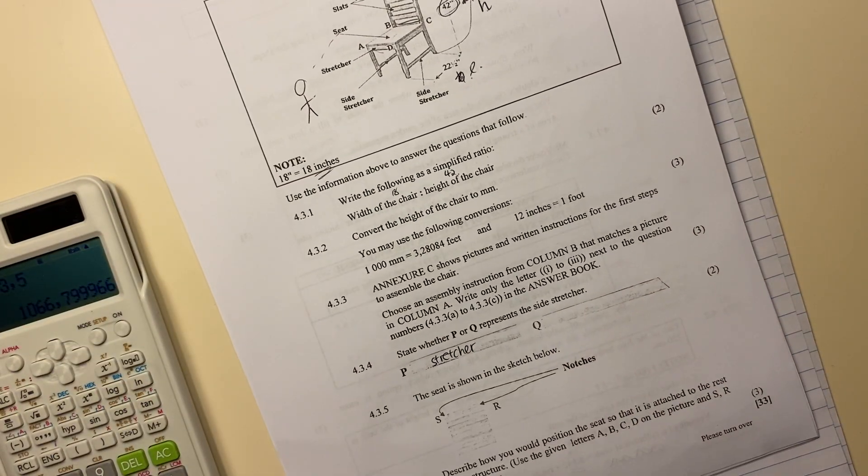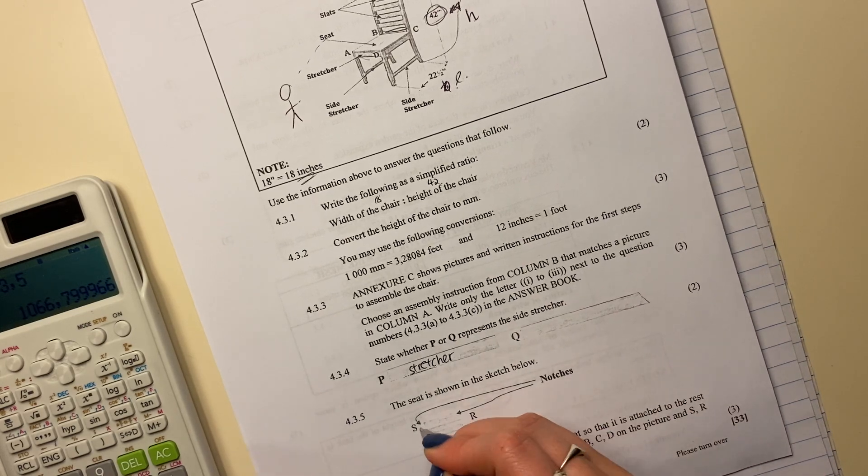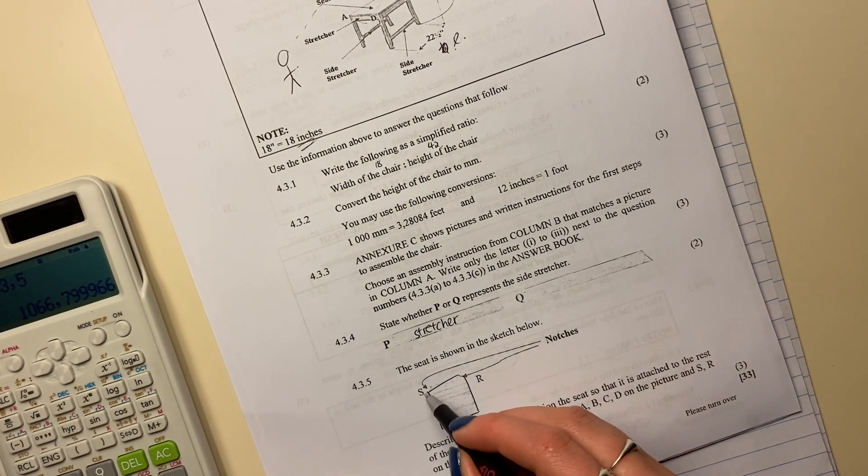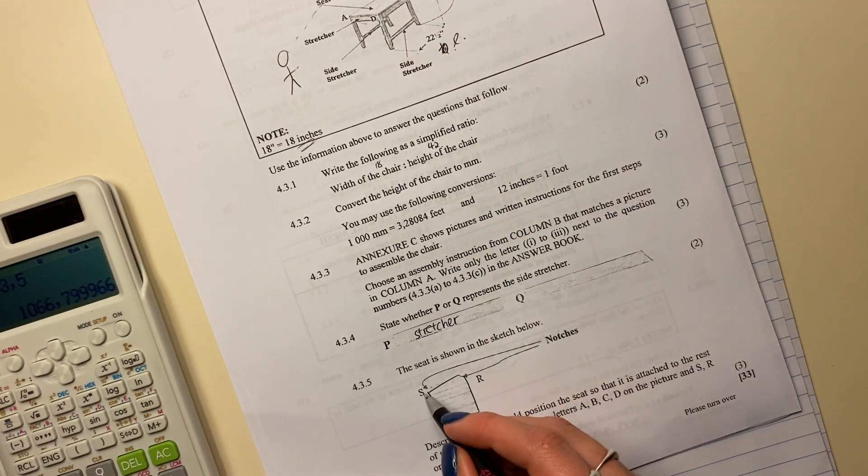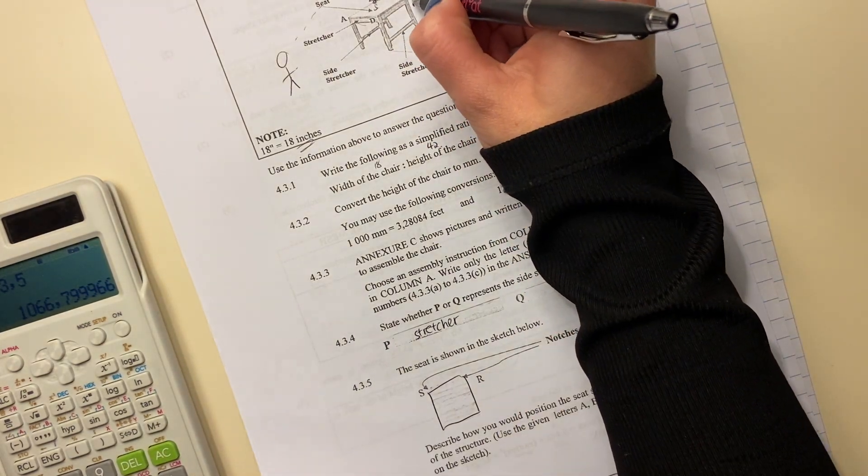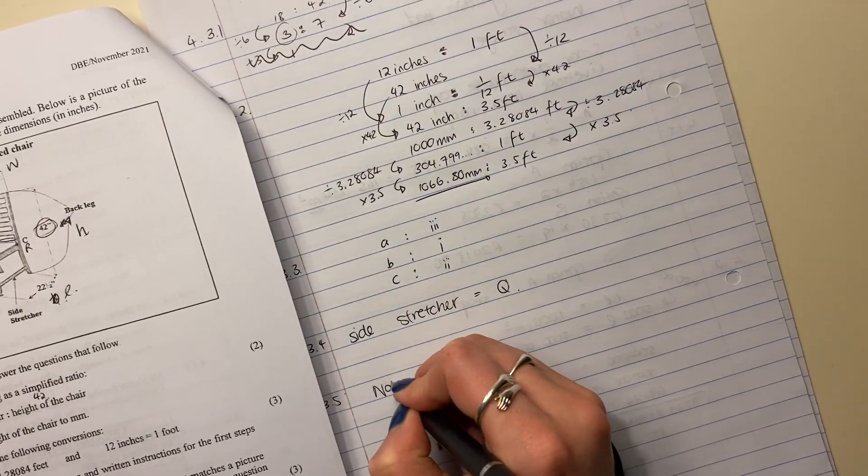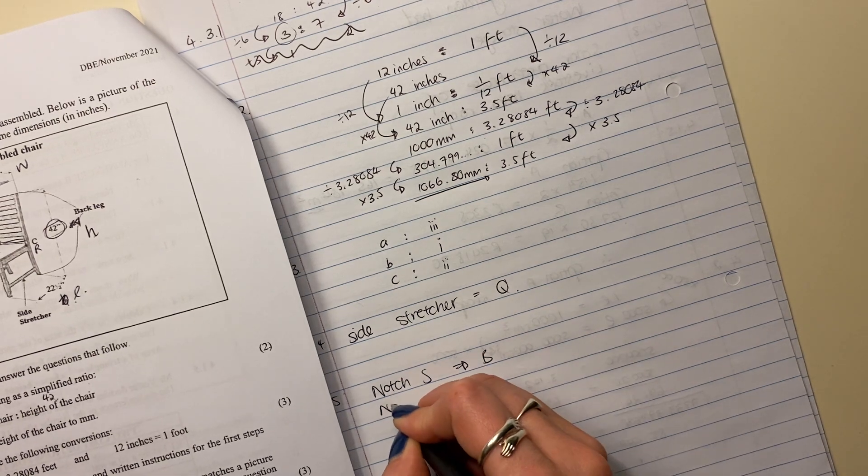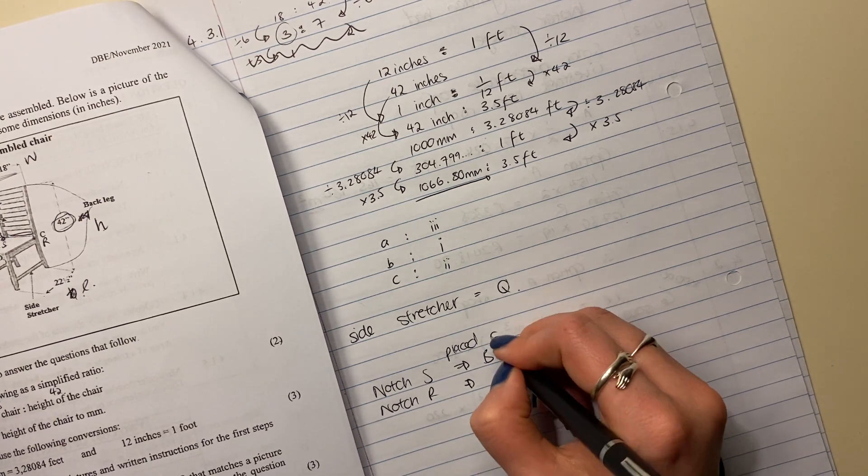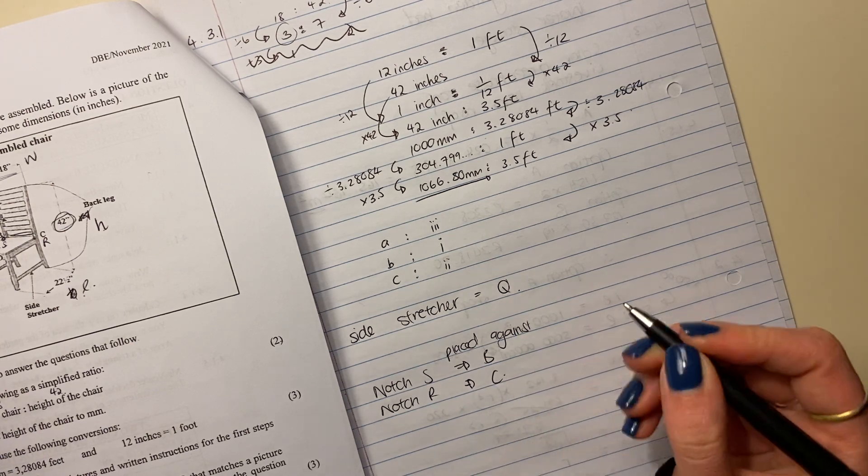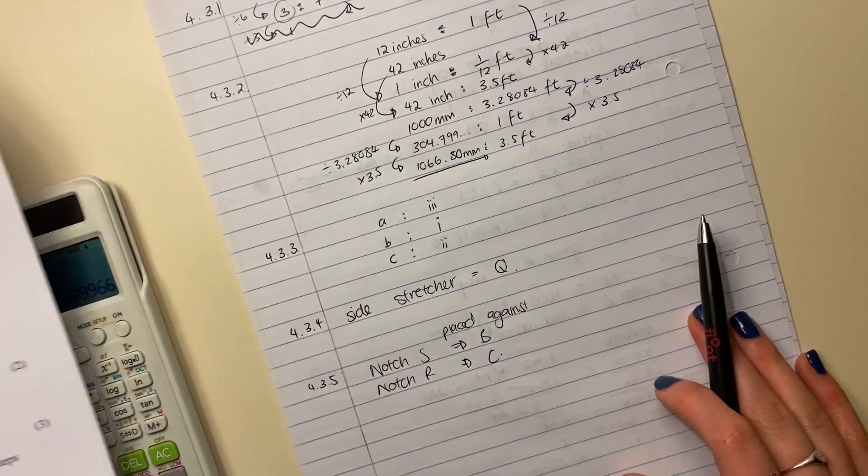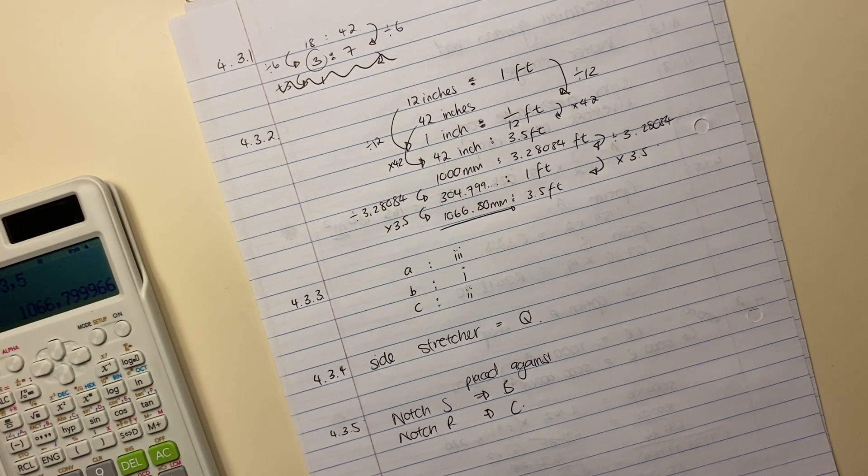Let's keep moving. Then it says the seat is shown in the sketch. So here's the seat. That's basically where you'll put your bum. It says, describe how you position the seat so that it attached to the rest of the structure. So I'm thinking that notch S would be placed against B and the notch R will be placed against C. Notch S, B, notch R, placed against, it's not supposed to be little arrows. Can't answer your things like that. Placed against B and same thing over there. So S to B, and then you would say R to C. I honestly hate these questions, but you can do it and we've done it. And we're now going to go to question five.